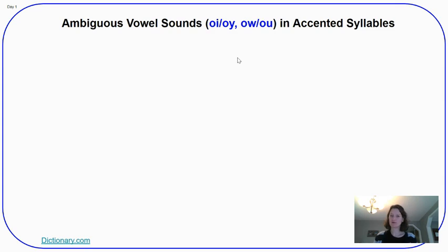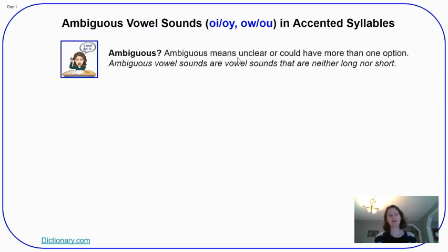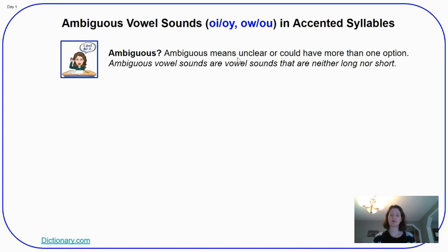So firstly I want to address what you might be thinking — ambiguous? What does ambiguous mean? Well, ambiguous means unclear, or something could have more than one option. So when we talk about ambiguous vowel sounds, we're saying that vowel sounds are neither long nor short. For the past five weeks we took one vowel every week and learned long and short spelling patterns, but this week we're looking at spelling patterns that are neither long nor short.